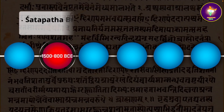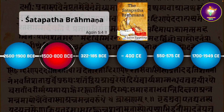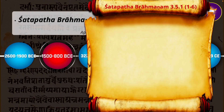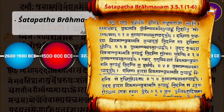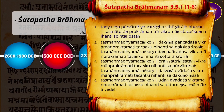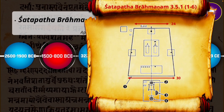Let us go back in time to the period of 1500 to 800 BCE. The Shatapatha Brahmana of the Shukla Yajurveda is believed to have been composed sometime during 1500 to 1200 BCE. What you now see is the original Sanskrit text of verses 1 to 6 of its Kanda or book number 3, Adhyaya or chapter number 5, and Brahmana number 1 — giving detailed instructions on how to construct the trapezoid-shaped Mahavedi, or great fire altar, for performing yajnas or sacrificial rituals. The gist is that the western side of the Mahavedi is 30 steps and the eastern side 24 steps — that is, in the ratio of 5 to 4.